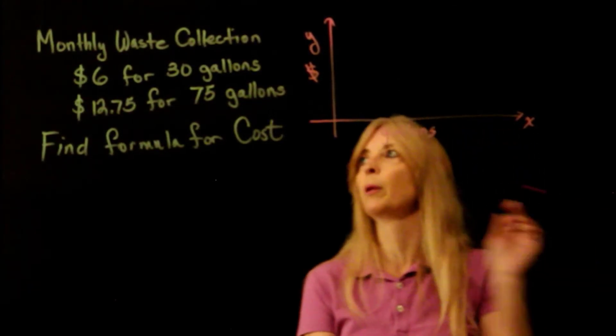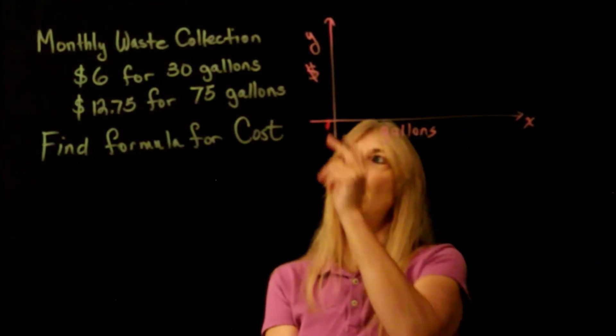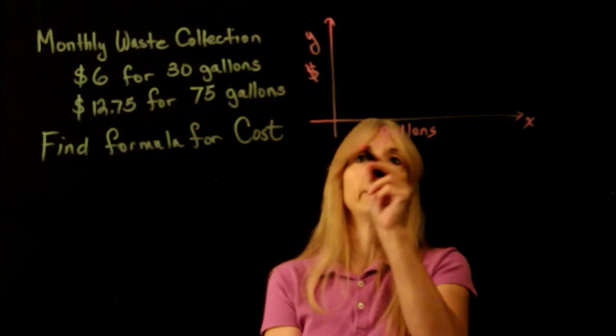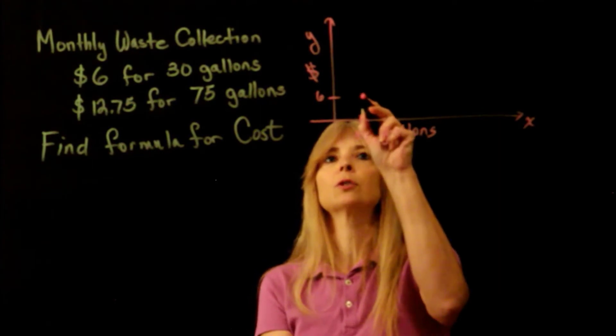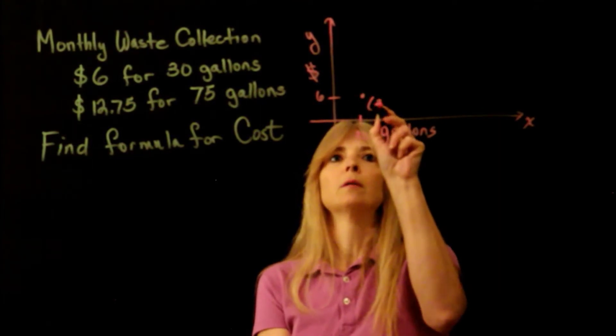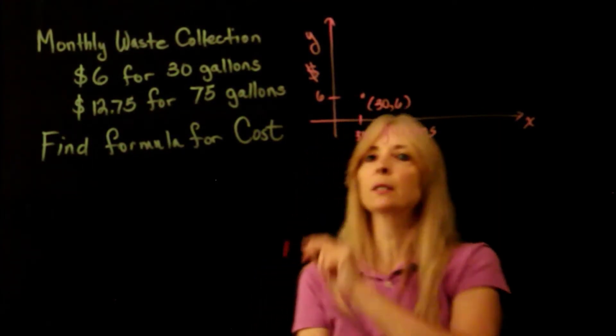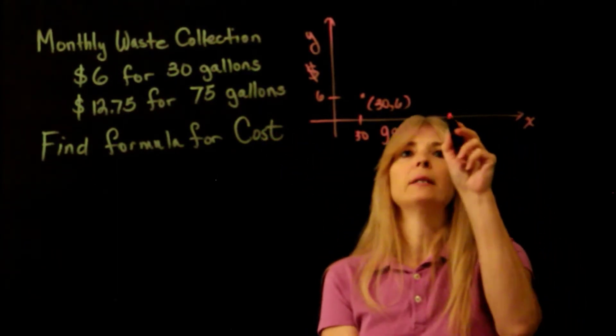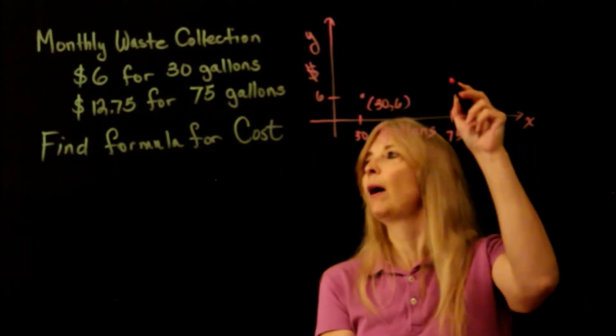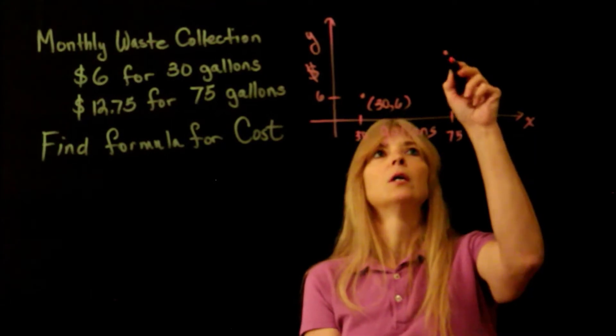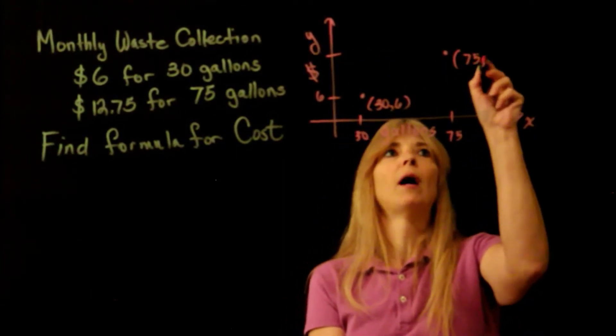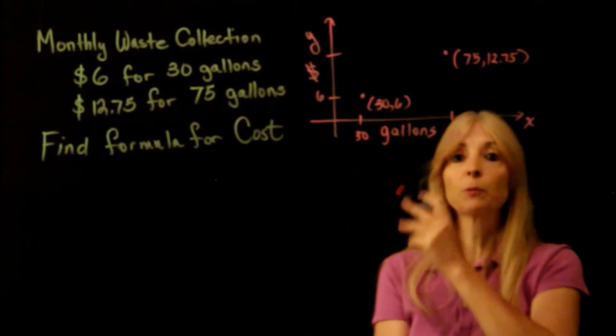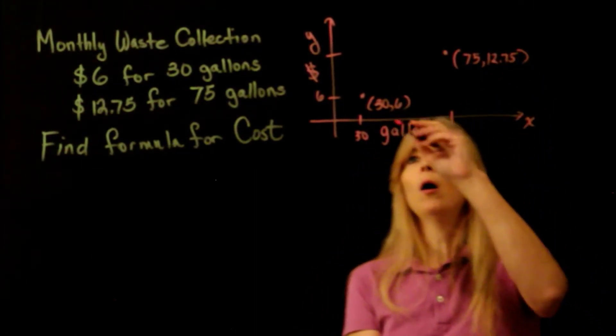So when I get ready to use my slope formula, I could also just plot this if I wanted as points. I could say, well, at 30 it costs $6, so that's the point (30, 6), and then at somewhere out here at 75, the cost is $12.75, so that would be (75, 12.75). So that's pretty easy to see that I just want to find the equation of that line.